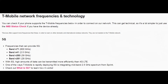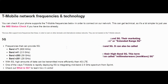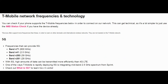This is a snippet from T-Mobile's website showing the four bands they currently use for 5G service. As you can see by the frequencies shown in parentheses, N71 is their low band 5G, N41 is their mid band, and bands N260 and N261 are their high band, also called millimeter wave 5G.